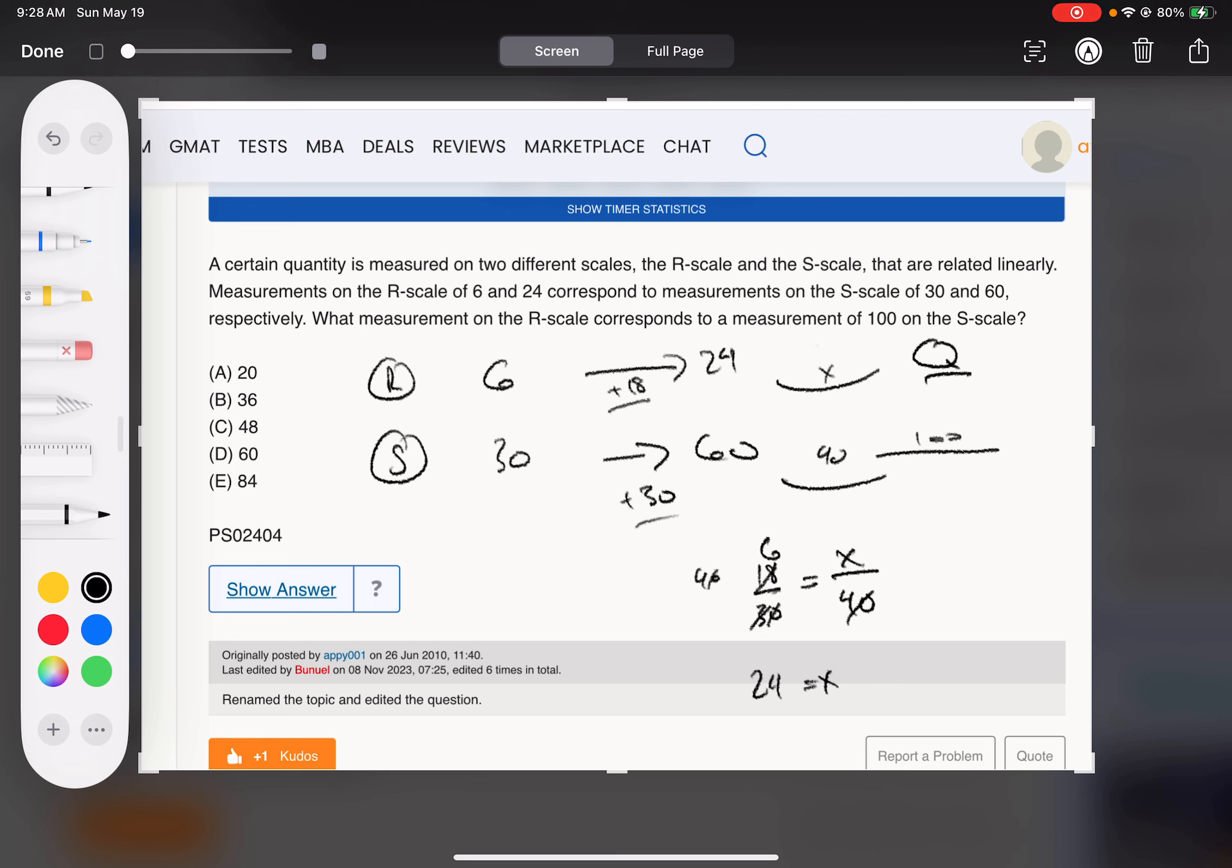So it should be a jump of 24 here. So 24 plus 24 gives me 48. Done.